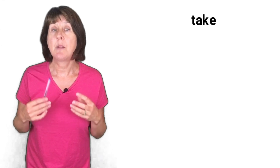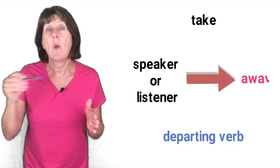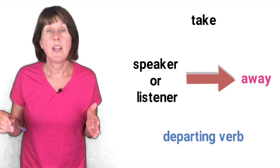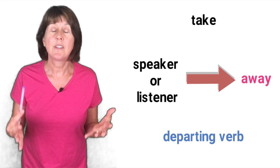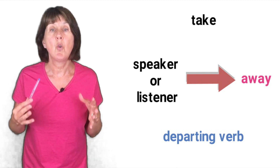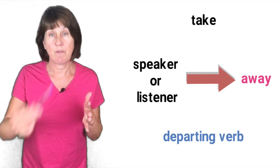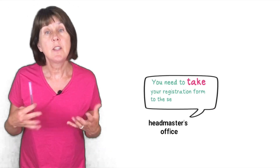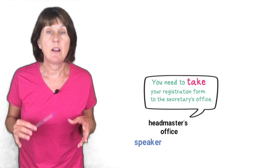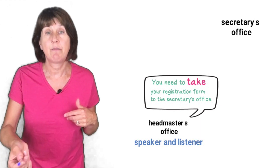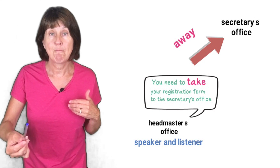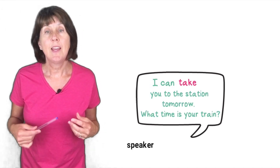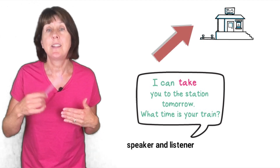Now let's look at take. This is a departing verb — it represents movement away from where the speaker or listener is when the speaker is talking. Think 'take away' and you can always remember: think of the direction of movement and whether it's towards or away from the speaker, then decide if it's bring or take. So imagine you're in the headmaster's office and the head says 'You need to take your registration form to the secretary's office.' Both are in the headmaster's office and the secretary's office is a different place — movement away, so we use take.